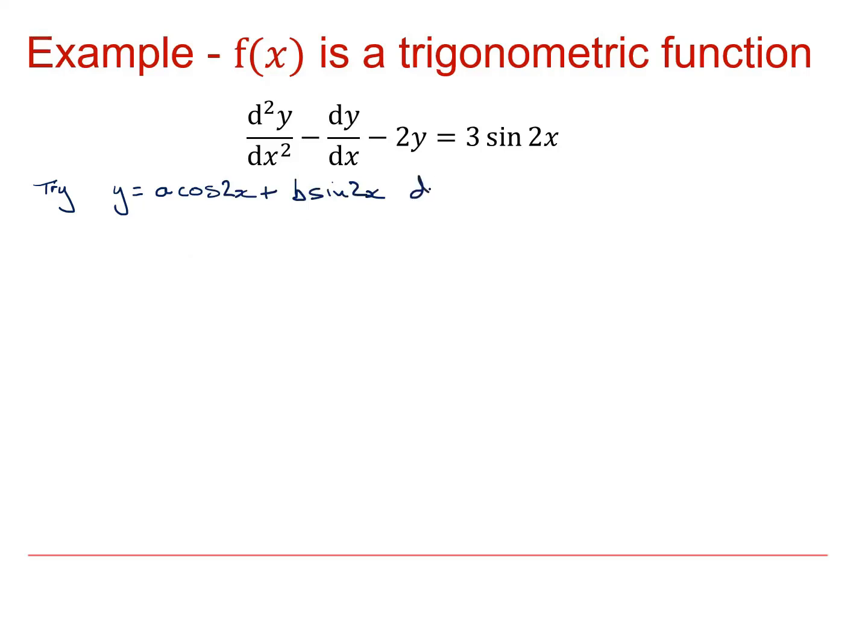So if I differentiate that, the first derivative is going to be, differentiate cos I get minus sine, so I'm going to get minus 2a sine 2x. And then differentiate sine, I just get cos, so I'm going to get plus 2b cos 2x. So the second derivative is going to be d²y by dx² which is minus 4a cos 2x minus 4b sine 2x.